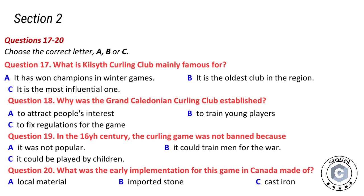In Kilsyth today, both men's and ladies' sections are thriving, participating in all major competitions and having won championships in the British Open in the past. The mother club of curling, the Grand Caledonian Curling Club, was instituted in 1838 — not to attract people's interest, but to regulate the ancient Scottish game of curling by general laws. With these official rules, young curlers could be trained in a more professional way. By 1842 the new national club had sought to obtain royal patronage, and it has ever since been known as the Royal Caledonian Curling Club.